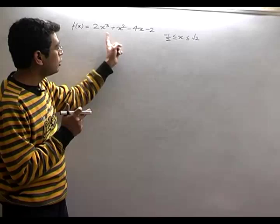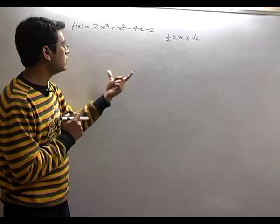First, that the function should be continuous. Yes, since this is a polynomial, this is a polynomial function. So the function will obviously be continuous.